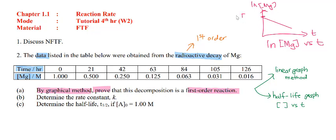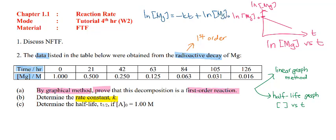The y-intercept of this graph is ln[Mg]₀ (the initial ln concentration of magnesium). To determine the rate constant from this graph, look at the gradient. We know that ln[Mg] = −Kt + ln[Mg]₀, so the gradient is equal to negative K.